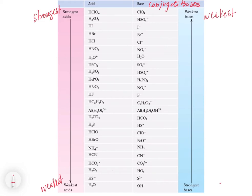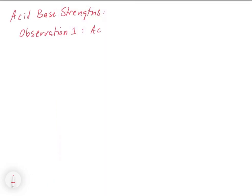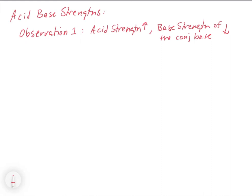The strongest bases have conjugates that are the weakest acids. This kind of makes sense, because if an acid is very strong and it wants to give off its proton, then it's less likely that the conjugate base is going to want to take that proton back and go back to the acid form. So it makes sense that when you have a very strong acid, its conjugate base is going to be weak. Our first observation is that as acid strength increases, the base strength of the conjugate base decreases — strong acids have weak conjugate bases, and strong bases have weak conjugate acids.